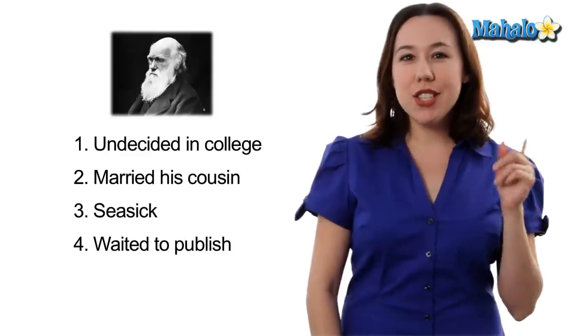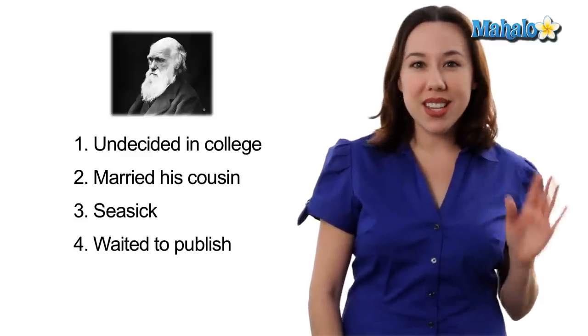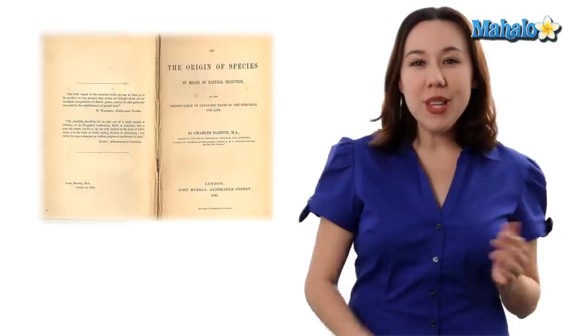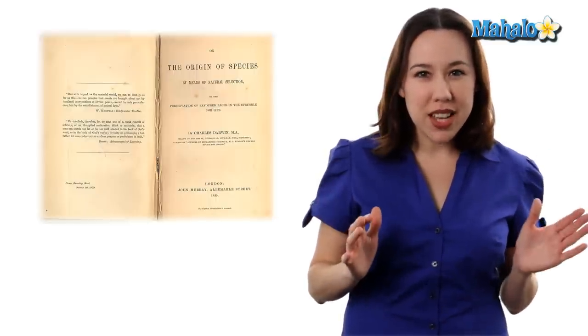Number four, Darwin sat on his manuscript, The Origin of Species, for almost 20 years. This manuscript is where he outlined his evolutionary theory, and it may have never been published had it not been for fellow naturalist Alfred Wallace, who came up with the same ideas independently.